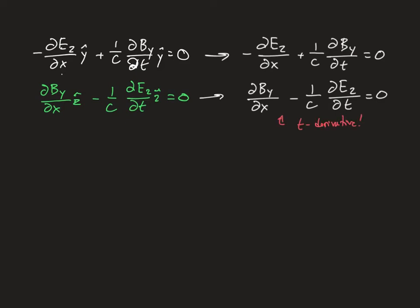We can make these two equations look very similar to each other if we take an x derivative of one and a t derivative of the other. It doesn't actually matter which order we do this. I'm going to take a t derivative of one equation and then take an x derivative of the other. The key is that this will produce the same mixed derivative term ∂²By/∂x∂t in both equations.